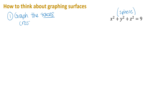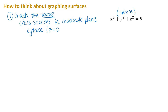Traces are cross-sections of the surface that lie in the coordinate planes. There are really three of them to consider: the XY trace, which is the cross-section where the surface passes through the XY plane — that occurs when Z equals zero; the XZ trace, which occurs where Y equals zero; and the YZ trace, which occurs when X equals zero. I recommend starting with these traces.